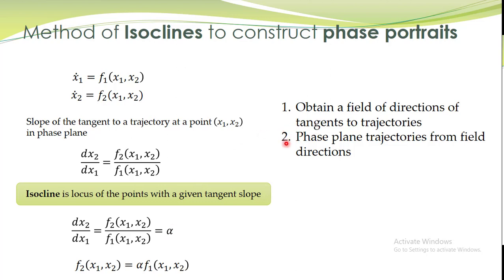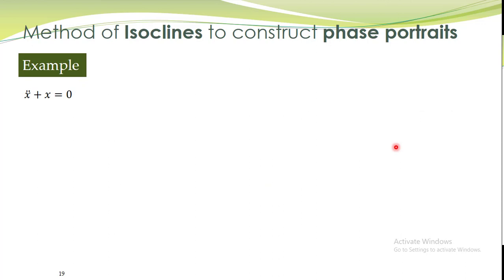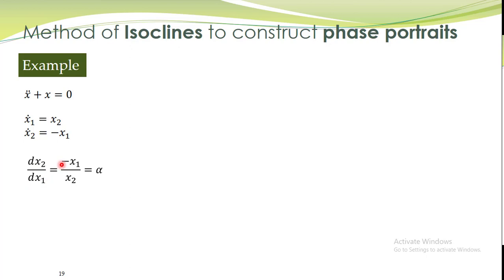In this method, we obtain a field of directions of tangents to trajectories, and from these directions we plot the trajectories of the system. Consider again a second-order system which can be written in state space form as: x1-dot equals x2, and x2-dot equals minus x1. The tangent slope of trajectories is given by dx2/dx1, which equals f2 divided by f1, and we set this equal to some constant alpha.